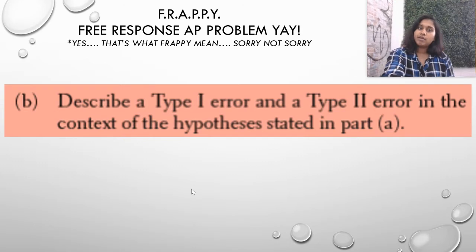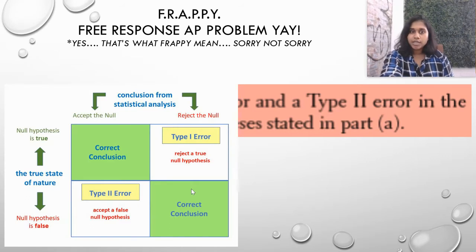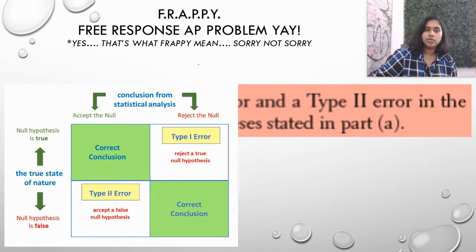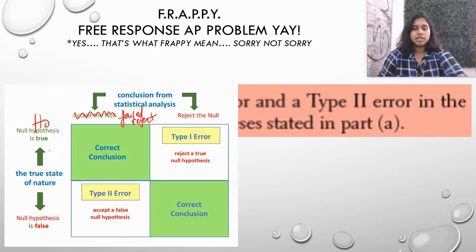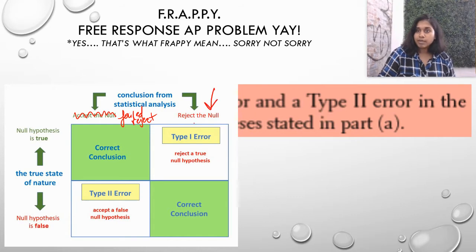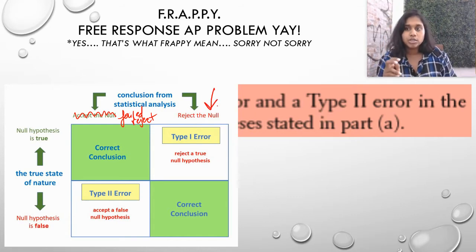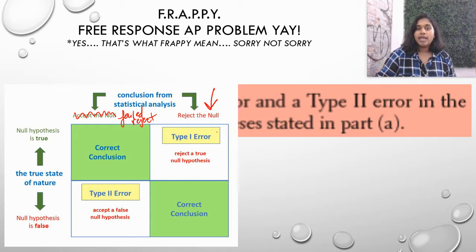Moving on. Let's describe a type 1 and type 2 error in the context of the hypothesis stated in part A. So to recall about type 1, type 2, I pulled up this little image. I really like these little charts to help understand this. So if I'm looking at the null hypothesis and I have failed to reject or reject. So if I have, let's start with rejecting the null. So here's my null hypothesis. So let's say I reject the null. We'll start there. I reject the null, which means I agree with the alternate. So if I reject the null and I'm incorrect, that's called a type 1 error.